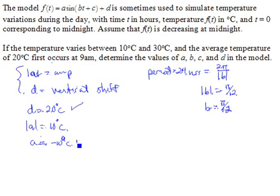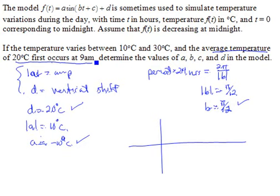So we've got d, we've got a, we've got b. We need to find the value of c in our model. To do that, let's first sketch the graph of our curve so far, and see how we're doing with getting the last condition that the average temperature of 20 first occurs at 9 a.m.